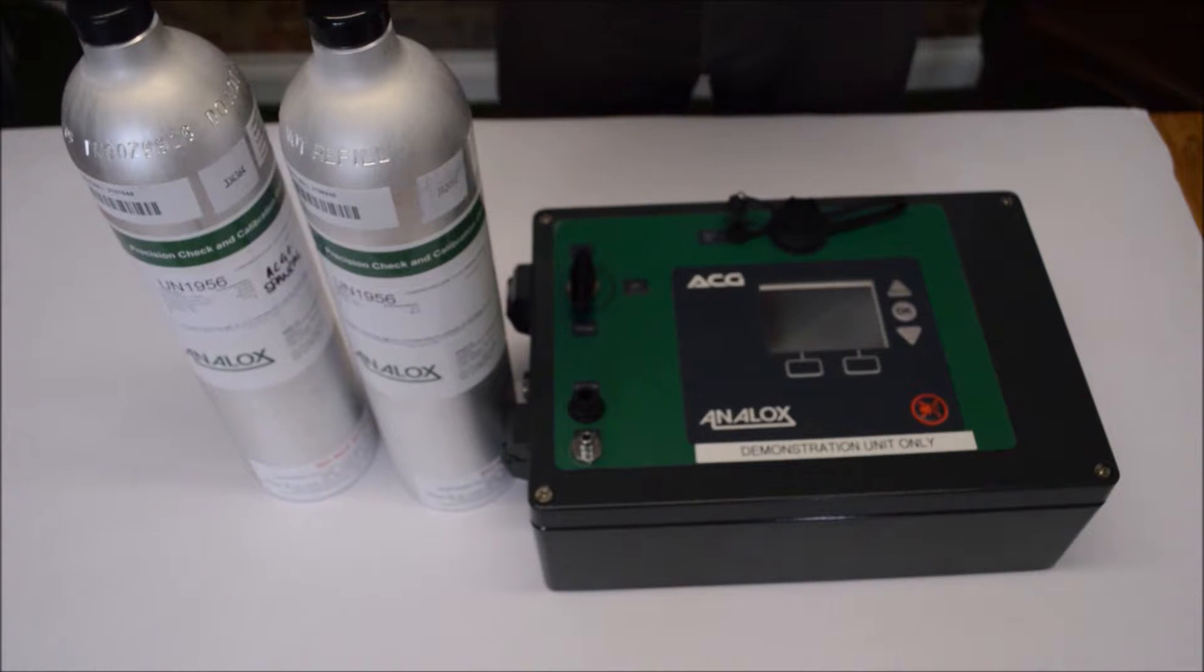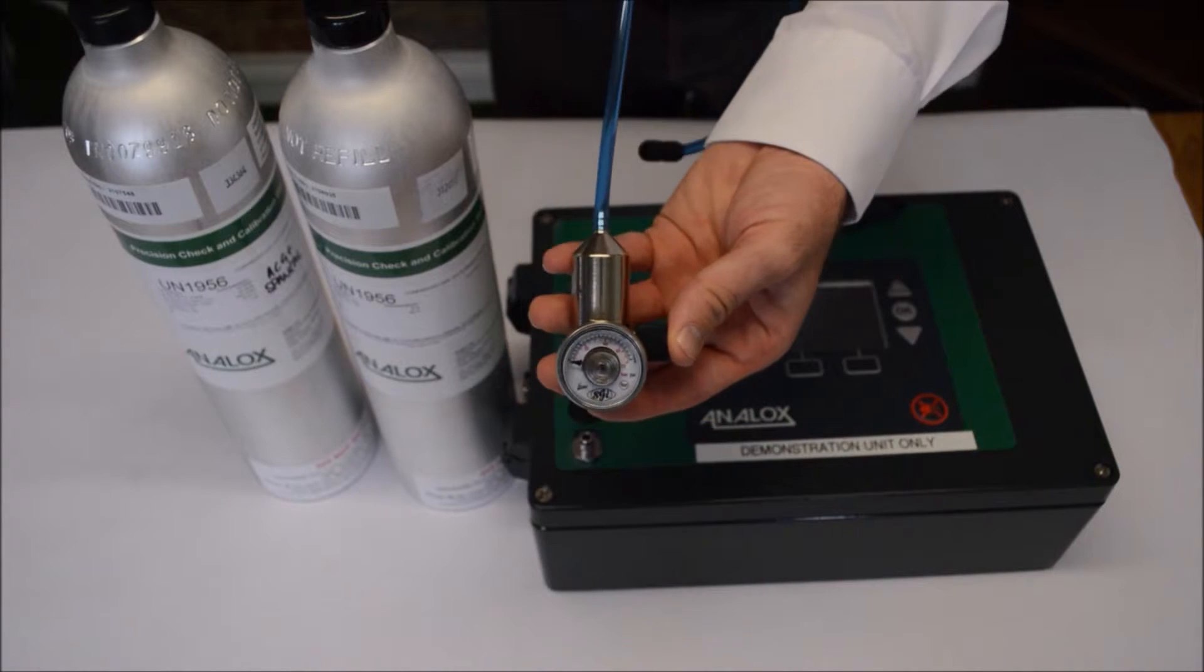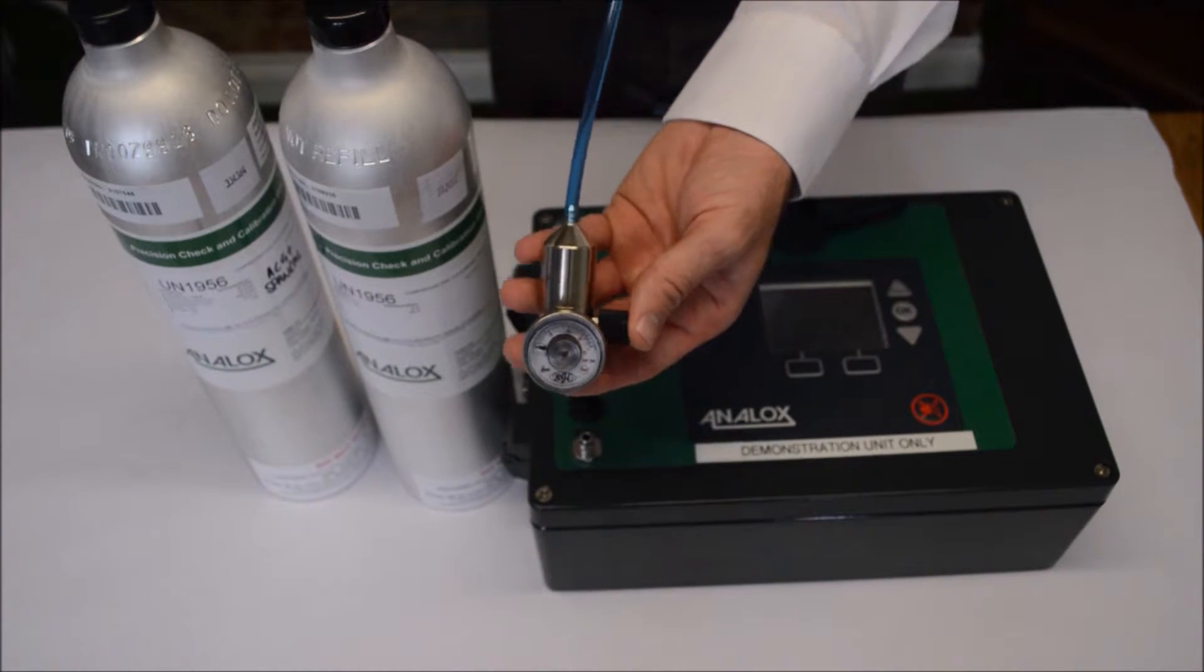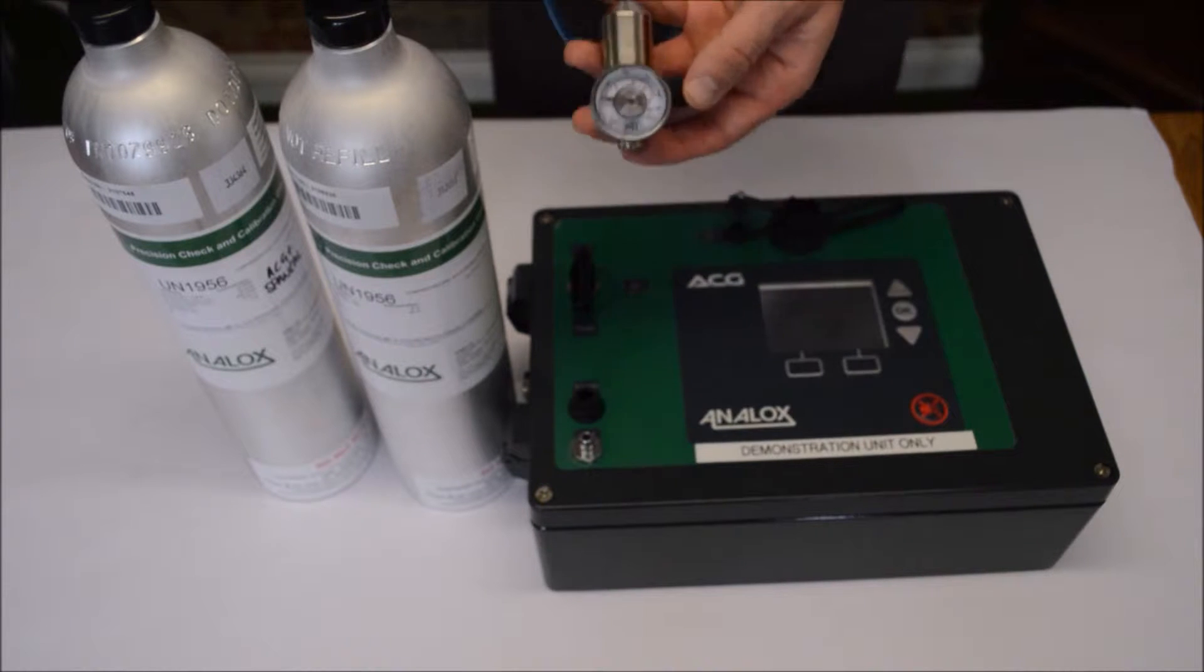We can adjust the gas mixes you need if you can't get these exact concentrations. What you also need is a calibration gas regulator. This reduces the flow from the calibration gas into the ACG unit to half a litre per minute.